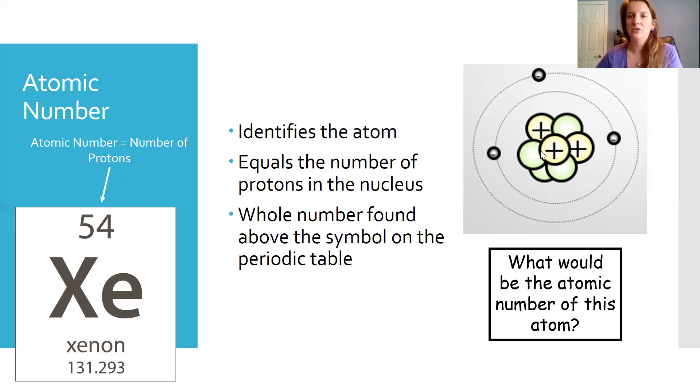You would look at the protons, so the positives, and we see one, two, three positives. So we look to see which element has an atomic number of three on our periodic table, and it would be lithium.